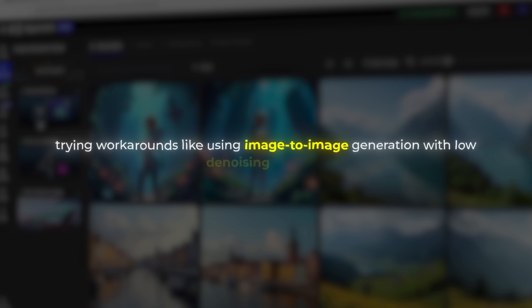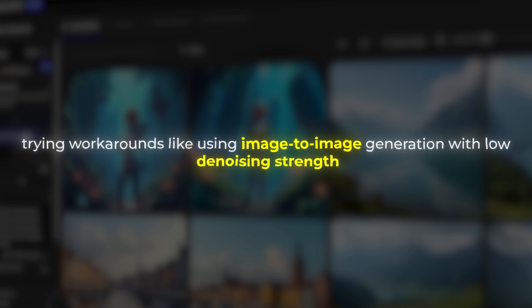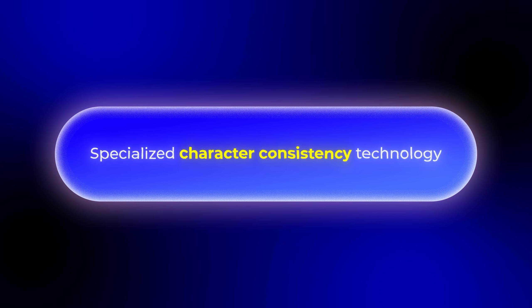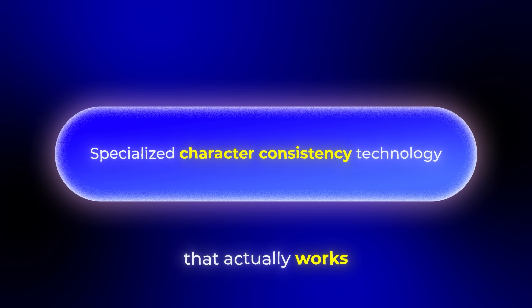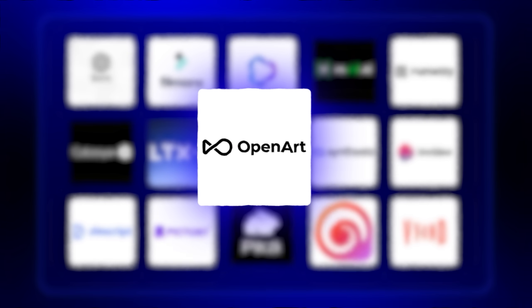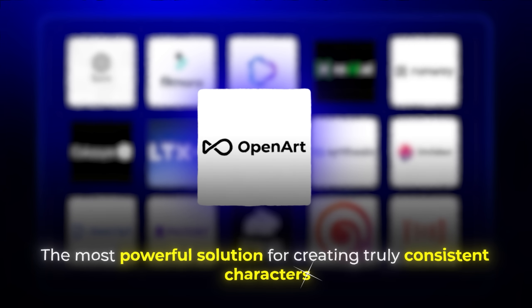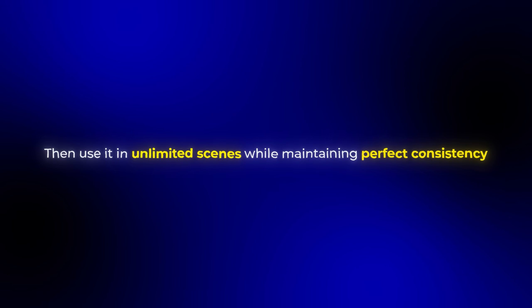This inconsistency problem has been the biggest roadblock for creators trying to use AI for art. I've personally wasted hundreds of hours trying workarounds, like using image-to-image generation with low denoising strength, carefully crafting identical prompts, or even attempting to train custom models — all with mediocre results. The breakthrough came when I discovered specialized character consistency technology that actually worked.